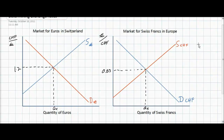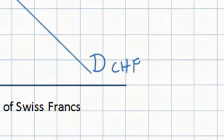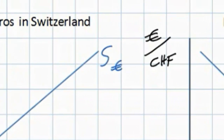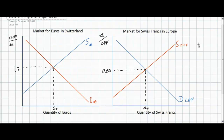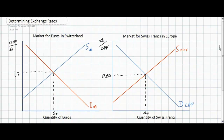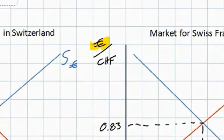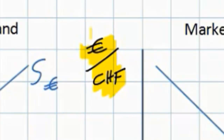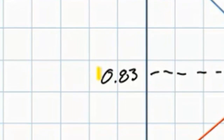In order to buy European goods, Swiss individuals must supply Swiss francs to the European foreign exchange market. The demand curve in the market for Swiss francs in Europe is blue because it represents the same individuals as the supply in the market for euros in Switzerland, which is also blue. European households demand Swiss francs in order to buy Swiss goods. Notice that the value of the Swiss franc is expressed in terms of euros — the exchange rate is the euro value of francs — therefore we label it as euros over francs. We see that the value of a Swiss franc is 0.83 euros, or 83 euro cents.